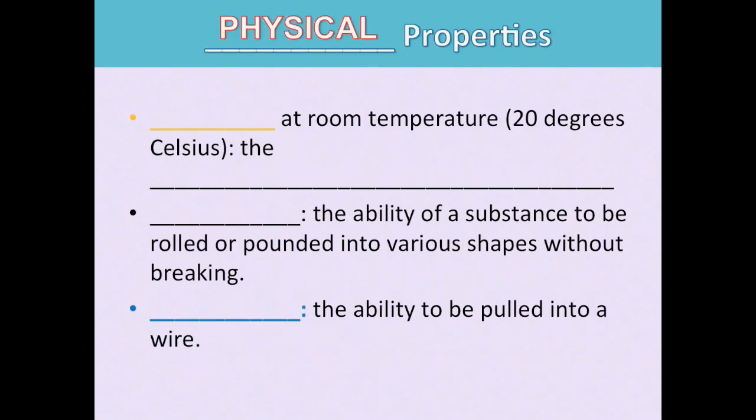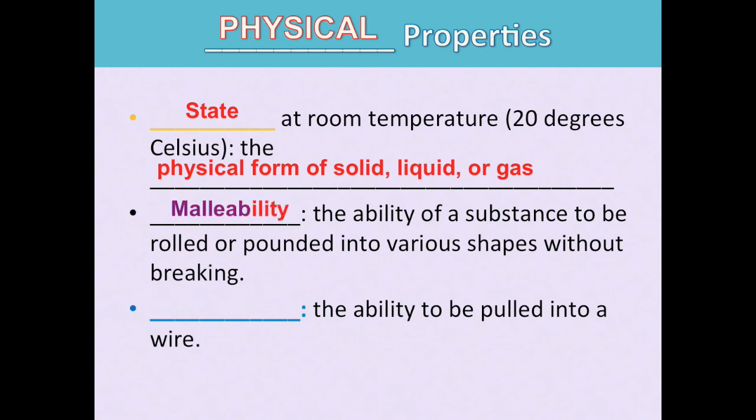Here's physical properties. For example, we have state at room temperature. Room temperature is 20 degrees Celsius. Is the object physically in its form a solid, liquid, or gas? That's the state it is. Malleability refers to the ability of a substance to be rolled or pounded into various shapes without breaking. Ductility refers to the ability to be pulled into a wire.